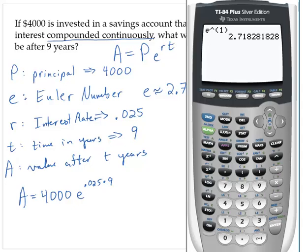For the problem we have here, we need 4000, then bring up the E. Notice how it brought up the exponent caret and opened a parenthesis for us. I'll type 0.025 times 9 and close off the parenthesis. Hit Enter, and we have 5009.29.